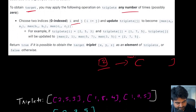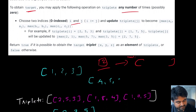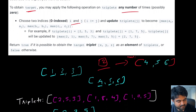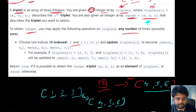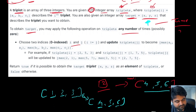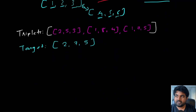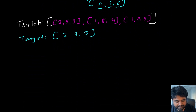For example, suppose we have triplet (1, 2, 3) and triplet (4, 5, 6). Amongst these two, the higher value at position one is 4, at position two is 5, and at position three is 6. So merging these two triplets forms (4, 5, 6). We can perform as many merge operations as needed among all the given triplets. If we can form the target, we return true; otherwise, we return false. Let's walk through an example.